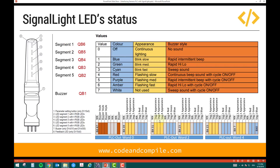Looking at byte QB6 for segment 1, within this byte the first three bits — bit 0, bit 1, and bit 2 — define the color using an RGB combination. The most significant bits — bits 5, 6, and 7 — define the appearance: whether you want the color to blink, flash, or remain stable. If the appearance bits are 0, the color will be stable continuous lighting. If you set it to 1 with blue selected, it will be blue blinking. You can also have blinking slow, blinking medium, blinking fast, or flashing slow, medium, fast, or not used.